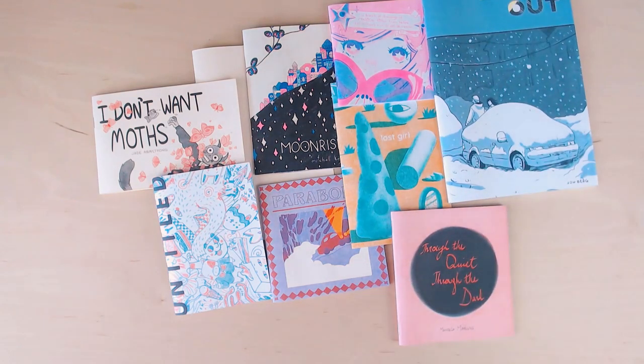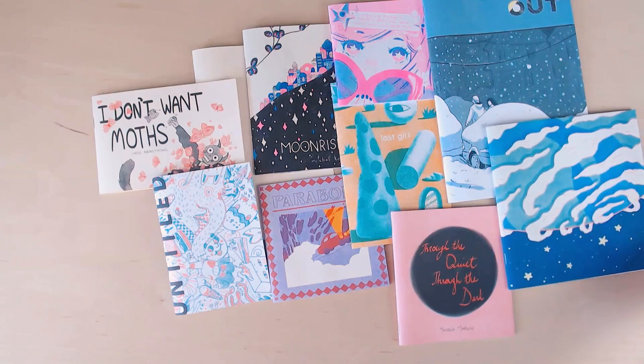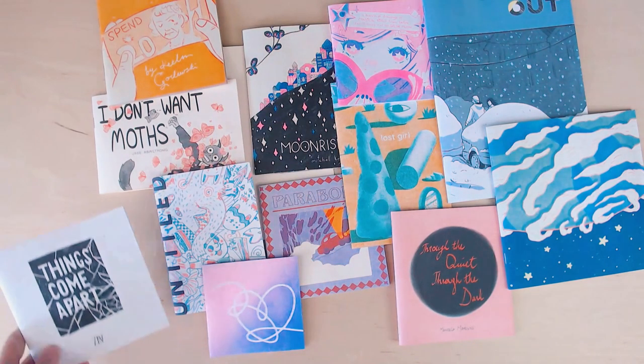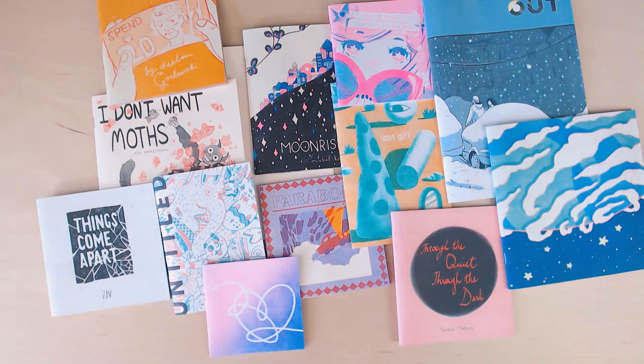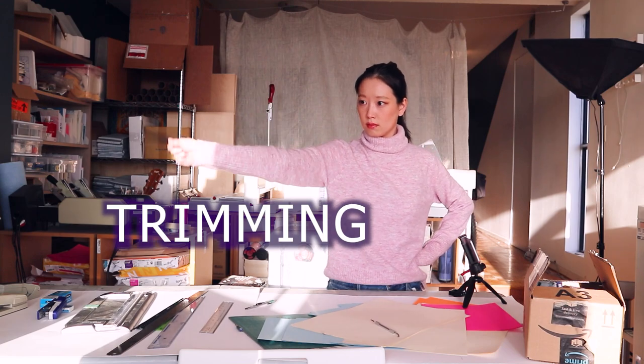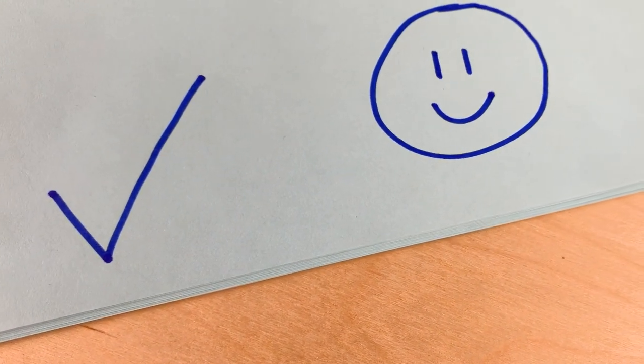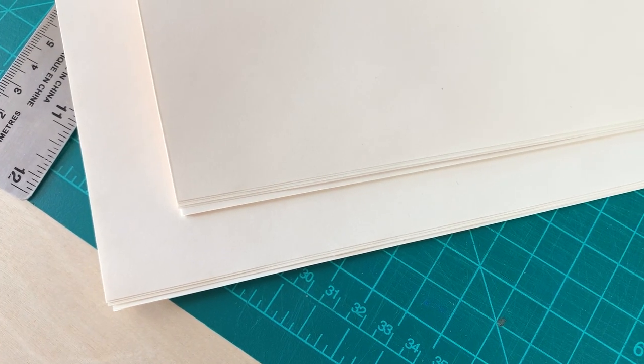And also, this one has a 10-sheet limit and even fewer sheets if you're using thicker papers or cardstocks. So I can't make really thick booklets with this machine. Alright, so you've stapled your booklets. Let's now talk a bit about trimming.